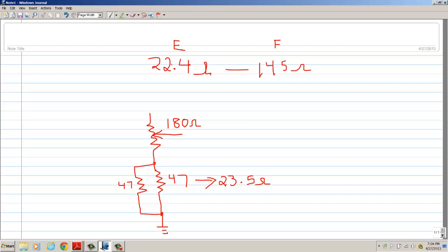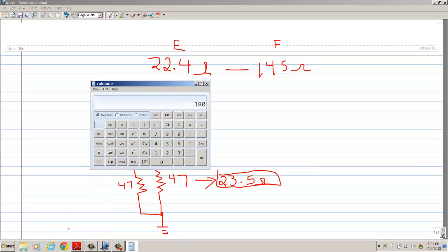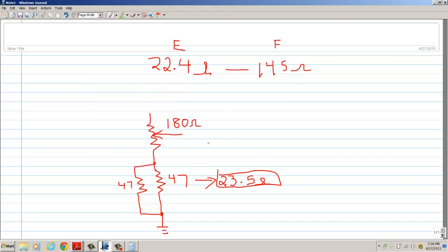Now that is pretty close to this 22.4 and that's close enough. Now you can see there's going to be a problem. My 23 and a half ohms is in series with this 180 ohms, so when I turn this wiper all the way fully clockwise, I'm now going to have 180 plus 23 and a half, so I'm going to have 203 ohms here, which is more than my 145.